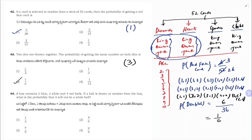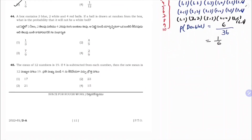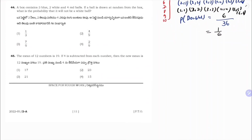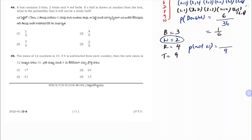A box contains 3 blue balls, 2 white balls, 4 red balls — total 9 balls. A ball is drawn at random. Probability that it is not white: favorable outcomes = 3 + 4 = 7. P(not white) = 7/9. Correct option is 3.